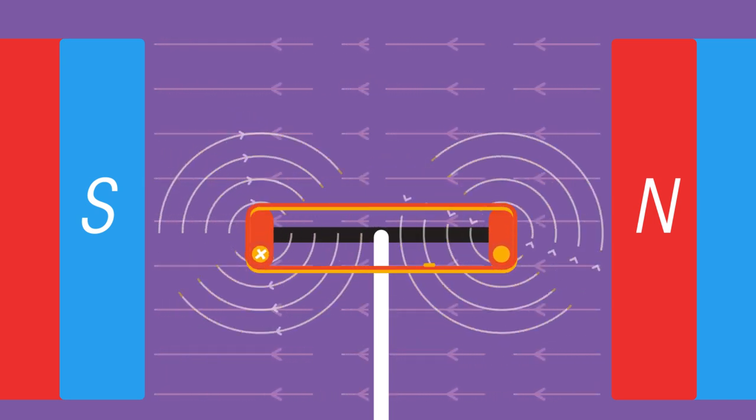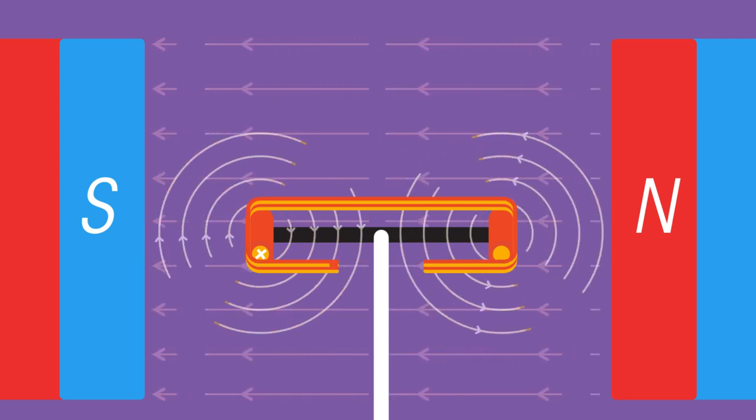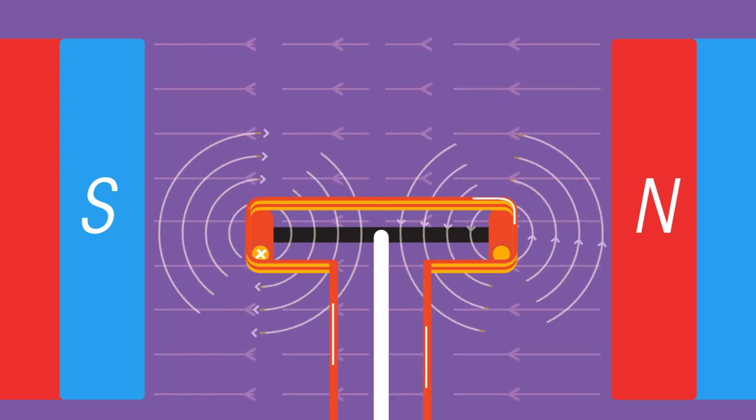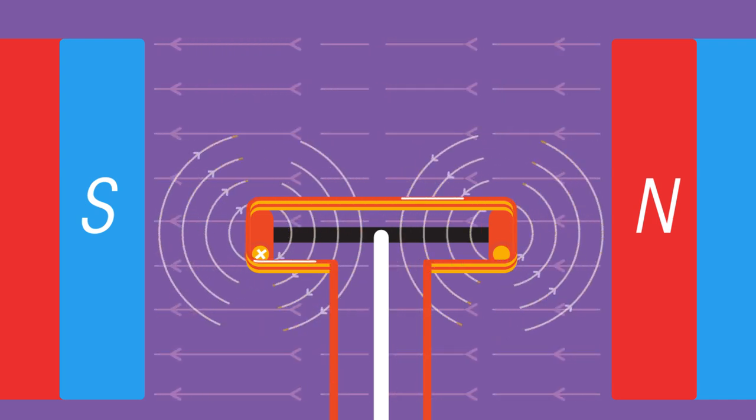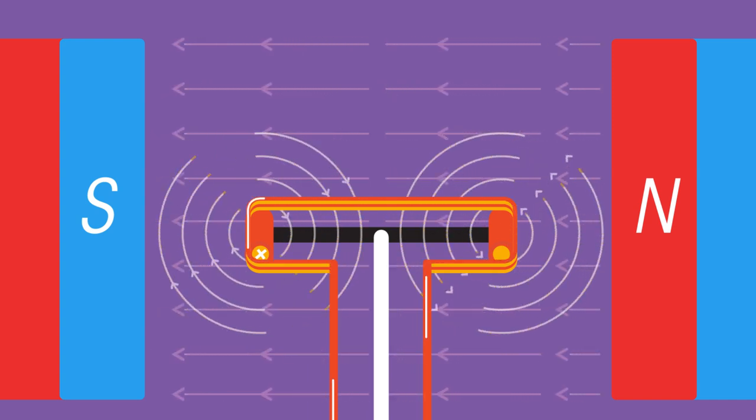The clever bit is how to supply a current to a spinning coil so that it always flows in the same direction, ensuring that the upward and downward forces are always on the same side.